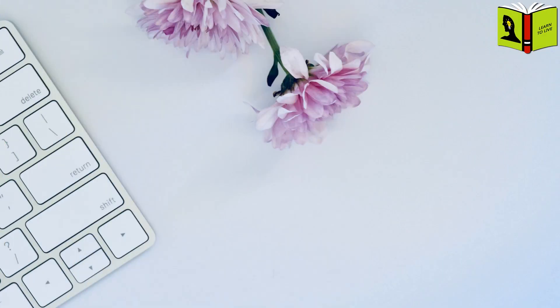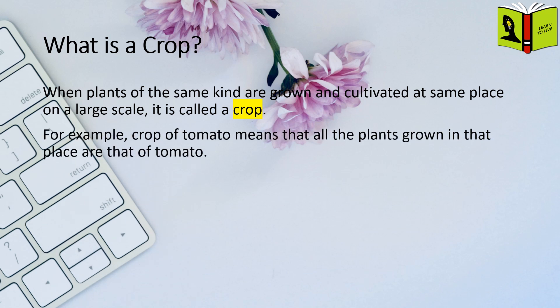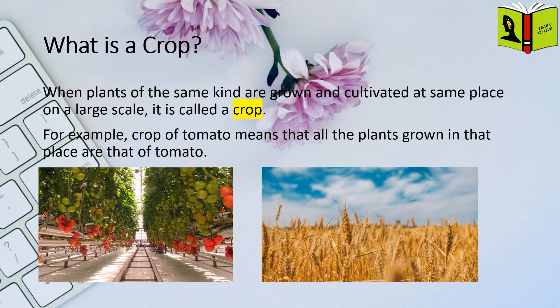At first, let us learn what is a crop. When plants of the same kind are grown and cultivated at the same place on a large scale, it is called a crop. For example, the crop of tomato means that all the plants grown in that place are that of tomato. In India, we have a lot of crops produced. Another example of a crop is wheat produced in one place on a large scale, as in the picture.